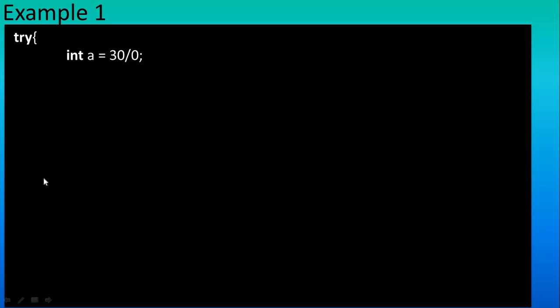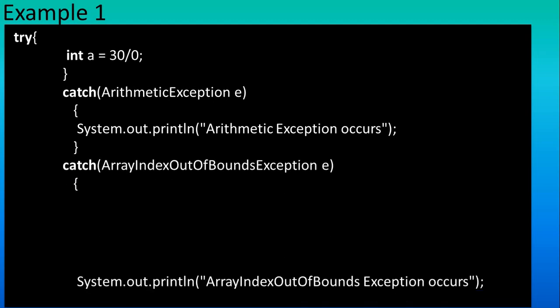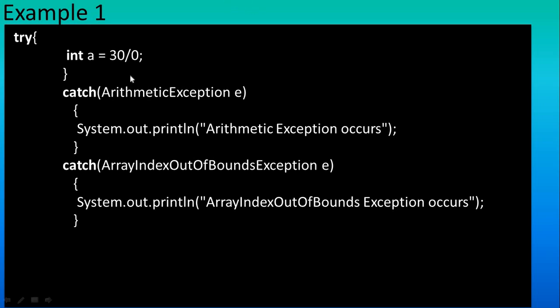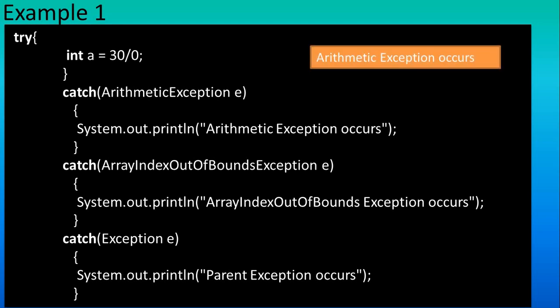In Example 1, if we write a variable equal to thirty divided by zero, as you know it is a divide-by-zero error, it will be handled by the catch block containing ArithmeticException. So our output is 'arithmetic exception occur.' Suppose we have three catch blocks — once this first catch block runs, the second and third will be skipped, because only one catch block is executed. Once the program goes into the catch block, it will not return back to the try block.